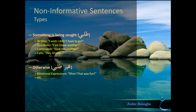There are several types of non-informative sentences — some we already mentioned, like questions, commands, and emotional expressions. And there are others as well, like when you call someone ('Hey Khalid'), or when you wish for something ('I wish I didn't have to go'), and more. In Balagha, we divide non-informative sentences into two major categories. The first is those types of sentences in which something is being sought or requested — these are called Talabi. The second is those in which something is not being sought or requested — these are called Ghair Talabi.